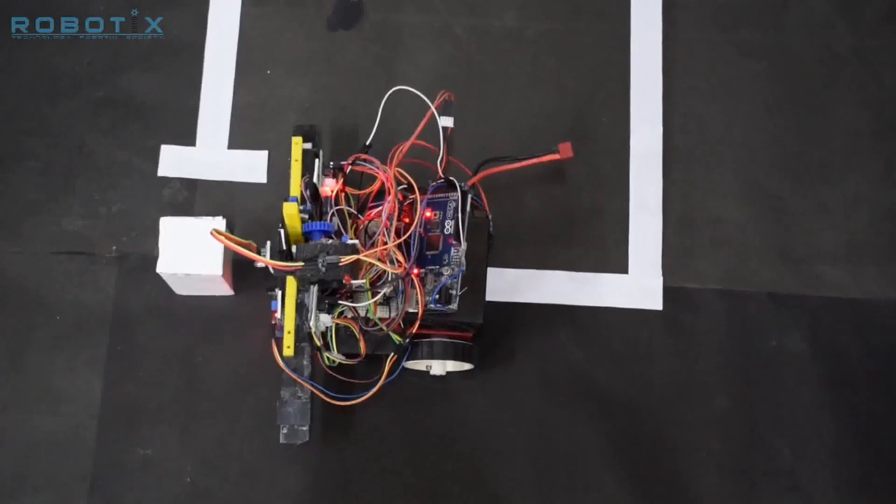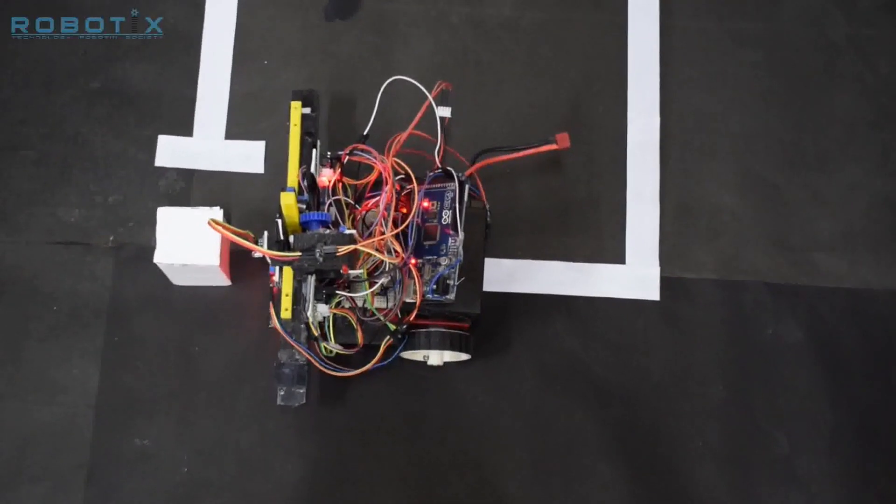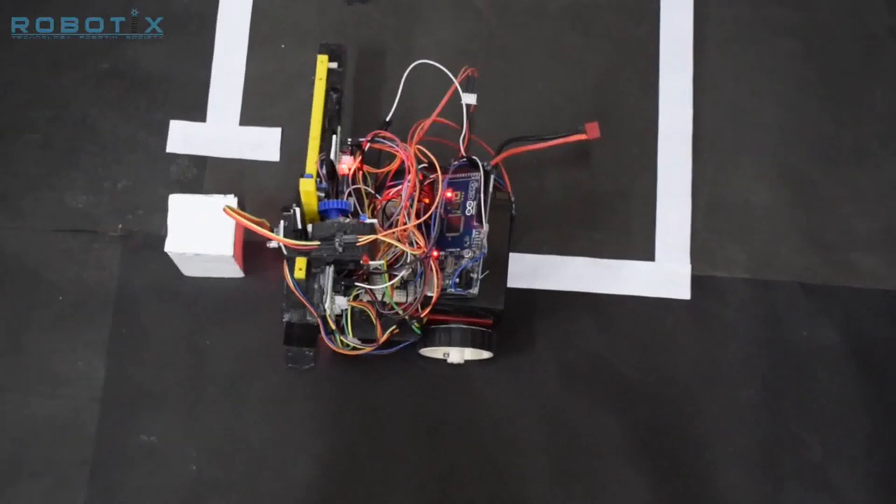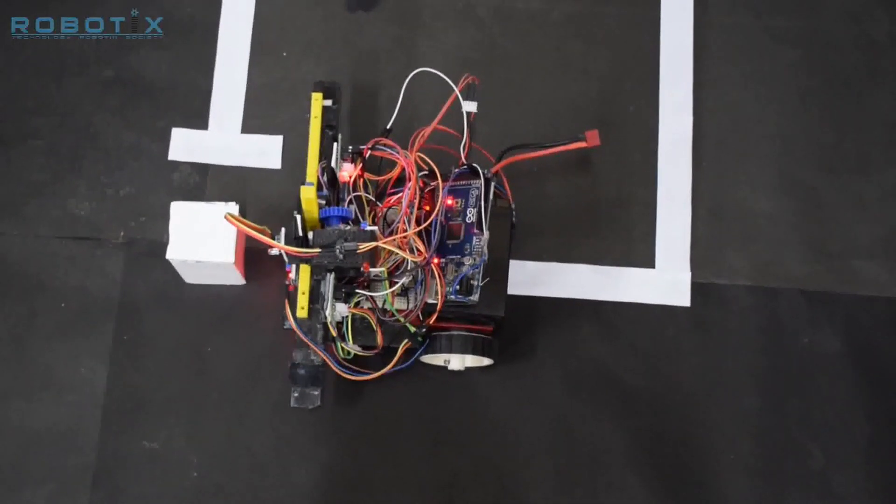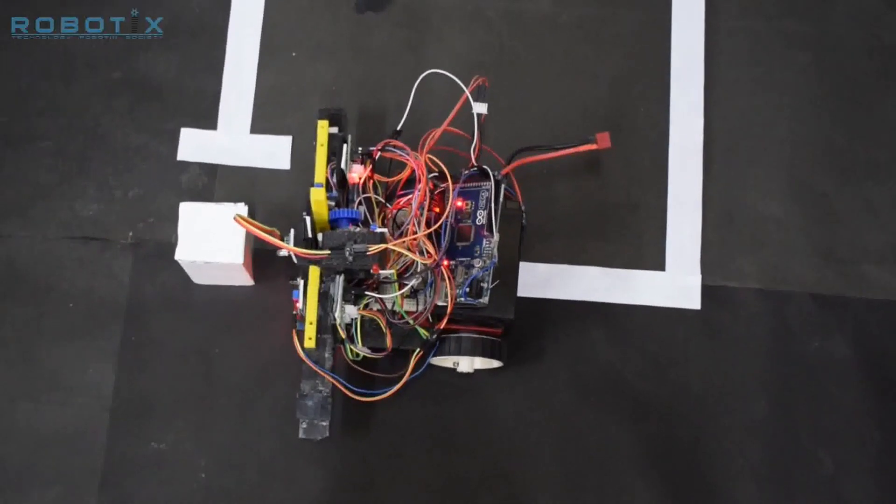The bot has two LEDs: blue for the first block and red for the second. After completely scanning the second block, it compares the volumes and indicates the larger one with the help of the blue LED.